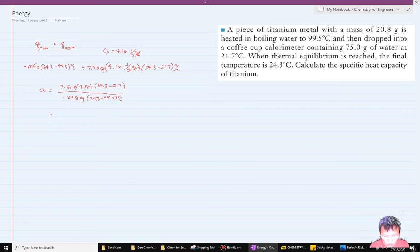So we calculate: 75.0 times 4.18 times (24.3 minus 21.7), divided by negative 20.8 times (24.3 minus 99.5). The Cp would be 0.0521 joules per gram degree Celsius.